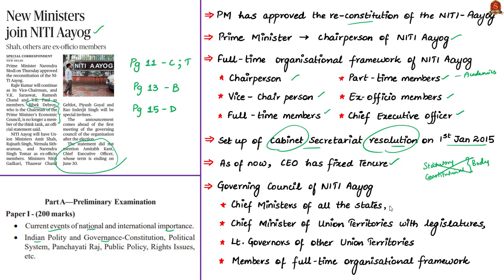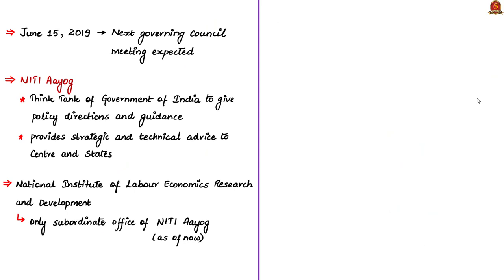The governing council of Niti Aayog consists of chief ministers of all states, chief ministers of union territories with legislatures — meaning Puducherry and the Government of NCT of Delhi — and the lieutenant governors of other union territories, plus other members from the full-time organizational framework. On June 15th, the governing council meeting is expected to take place, where the Prime Minister and other members will discuss a wide range of pressing issues. Niti Aayog is basically a think tank of the government to give policy directions, providing strategic and technical advice to central and state governments. Its one subordinate office is the National Institute of Labor Economics Research and Development, an autonomous institute under Niti Aayog.